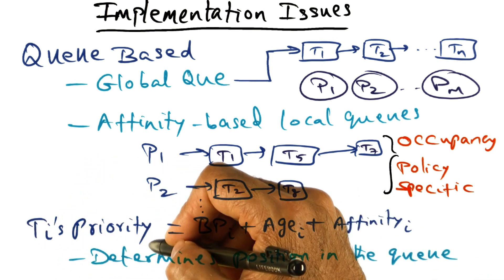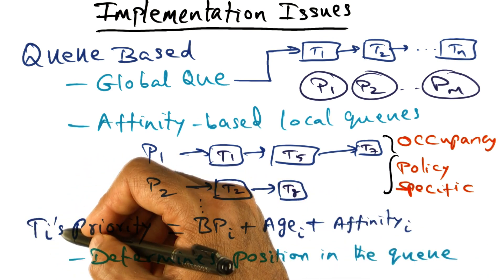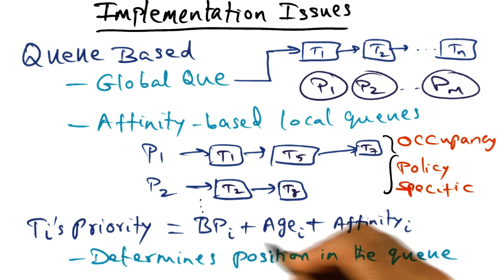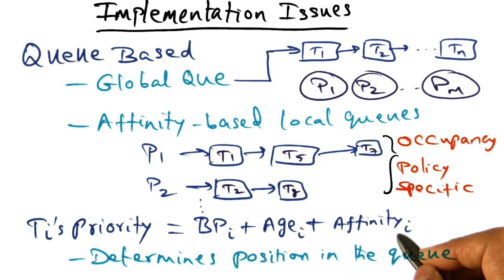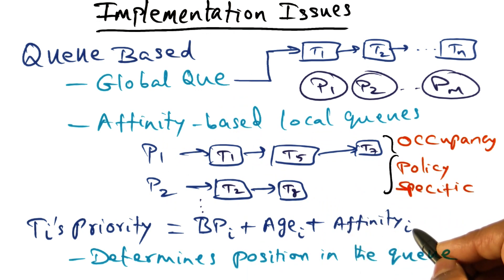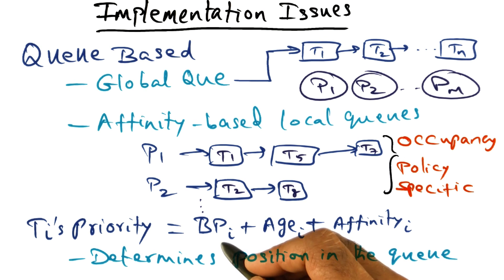In particular, a priority of a thread is determined by three components. Now one component is the affinity component, assuming it's an affinity based scheduling policy. But in addition to that, it might also use additional information.